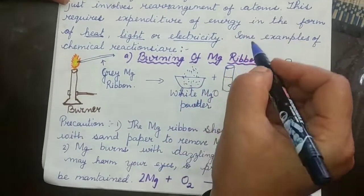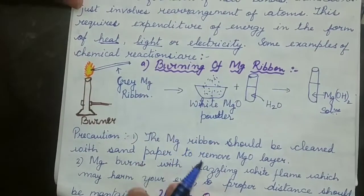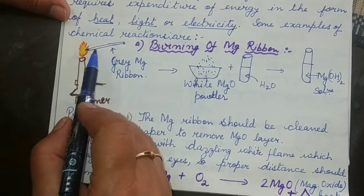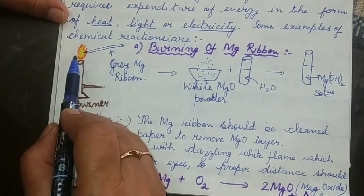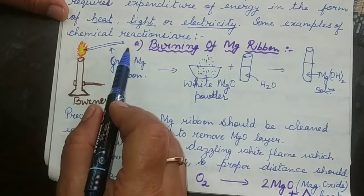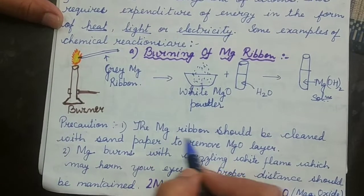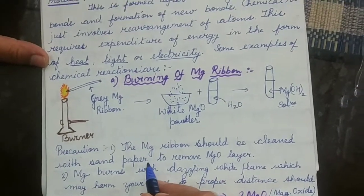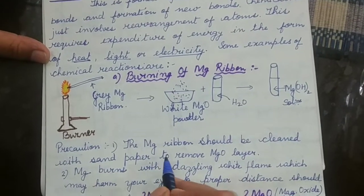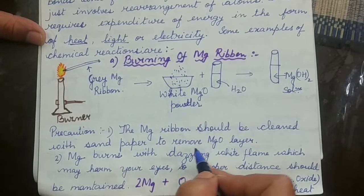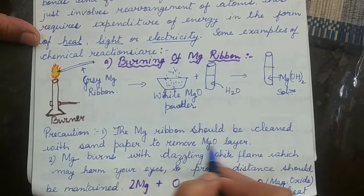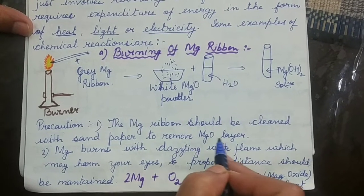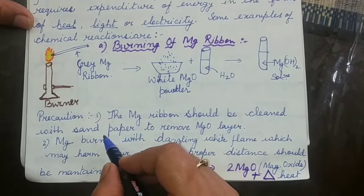Now let us study some of the chemical reactions. Here I have made the diagram of a burner in which we are burning a magnesium ribbon. Before burning the magnesium ribbon, the magnesium ribbon should be cleaned with a sandpaper. We need to rub it with sandpaper so that the magnesium oxide layer which is formed on the magnesium ribbon is removed.